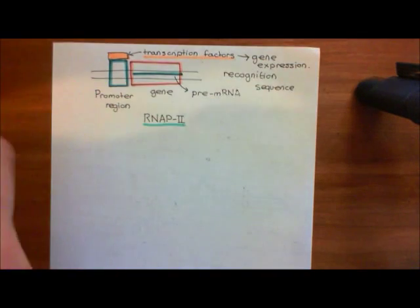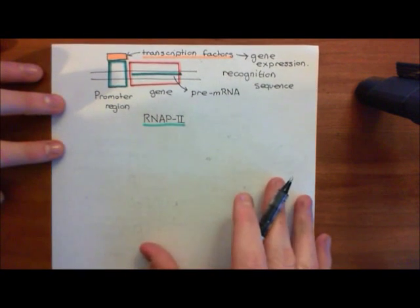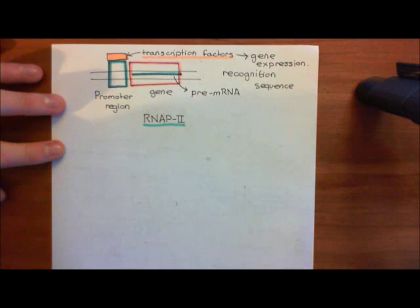Transcription factors are very powerful in specializing cells, which is a process known as differentiation. Because they change gene expression in cells, they are capable of differentiating cells into certain cell types.